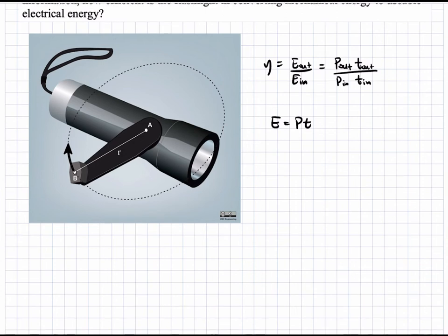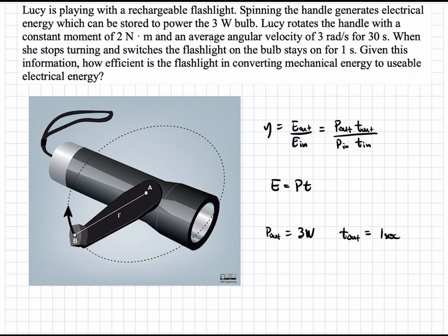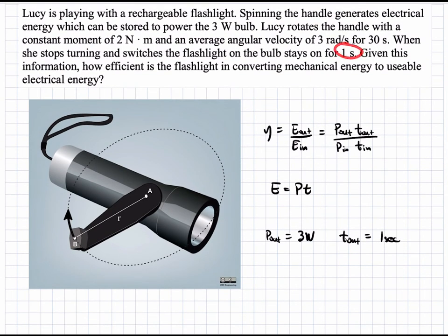So, let's work on the out first. P-out, we said, is equal to 3 watts, and then T-out is equal to 1 second. This is just given in the question over here. 1 second, 3 watts.